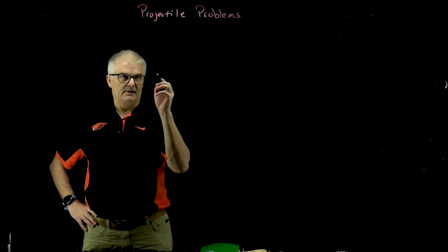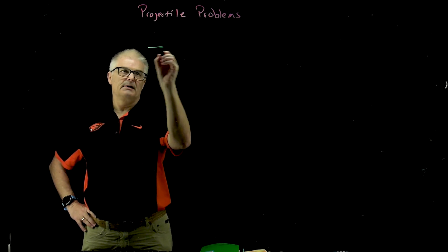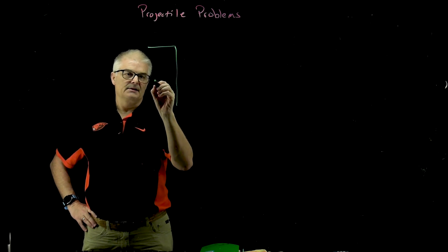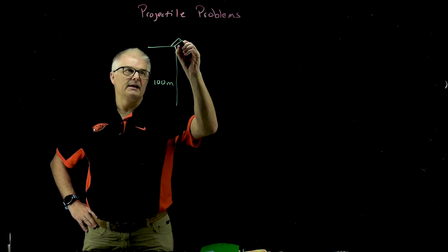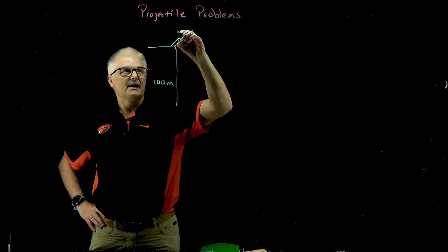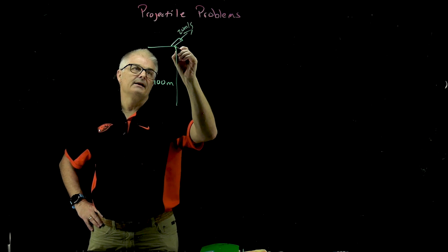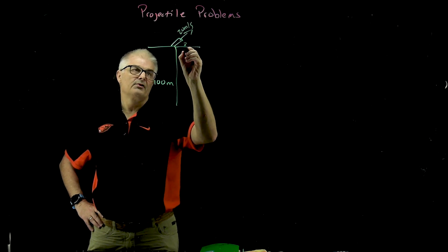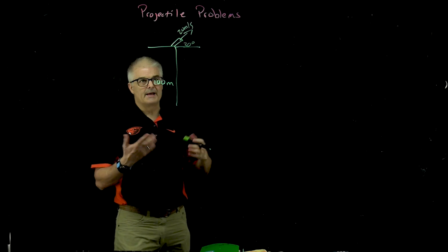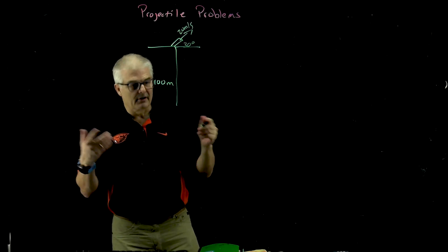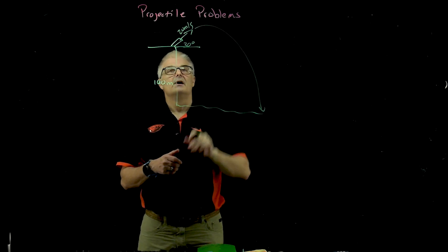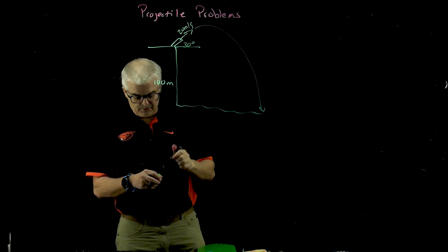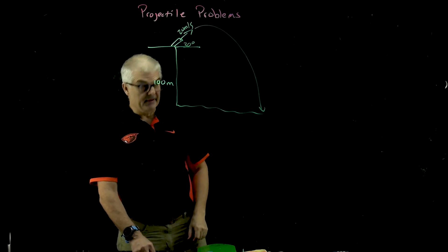Let's do a problem similar to the last problem but with an angle. I have a cliff that's a hundred meters height. I've got a cannon that's not shooting horizontally but shooting off at 20 meters per second at an angle of 30 degrees. We want to ask how far does it travel—it's gonna make an arc and land over here—and we want to solve for all the variables that we can.